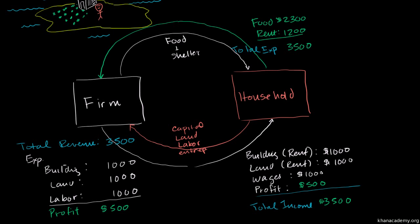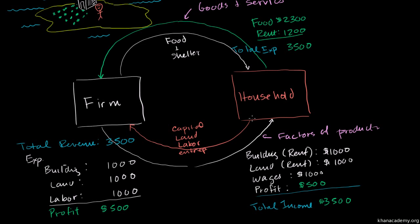The firms provide the households with goods and services, and then the households provide the firms with the factors of production. You might say, well, aren't other firms also providing factors of production? Yes, but those firms are owned by someone — at the end of the day, households are really giving the firms the factors of production. And in exchange, the firms give the households income — essentially rents on the different factors of production. In exchange for the goods and services, households make expenditures that can also be considered revenue of the firm.